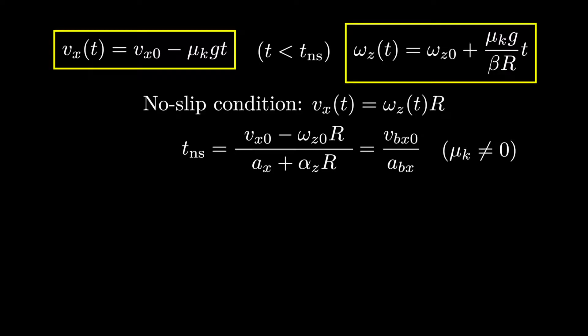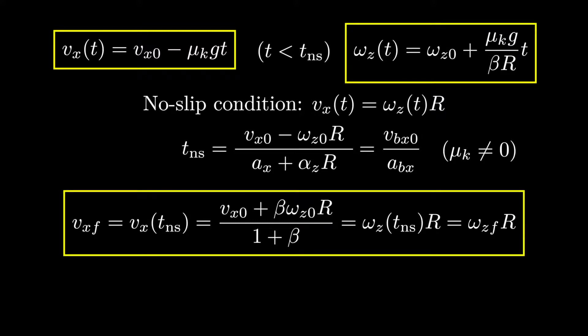Substituting the no-slip time back into our expressions for the translational and rotational velocities, we can then determine the motion of the object once it begins rolling without slipping. In other words, the same initial conditions lead to the same final velocity regardless of whether the object is sliding on a wooden table or on ice. This surprising result is a consequence of the fact that, although the friction force, and therefore the acceleration, is proportional to the coefficient of friction, the no-slip time turns out to be inversely proportional to the friction coefficient. Therefore, a larger friction force is offset by acting for a proportionally smaller time.